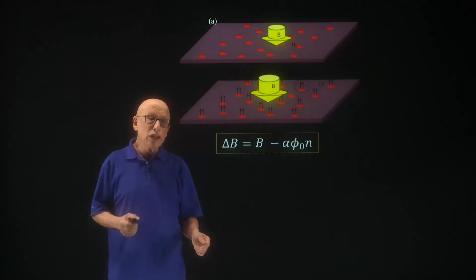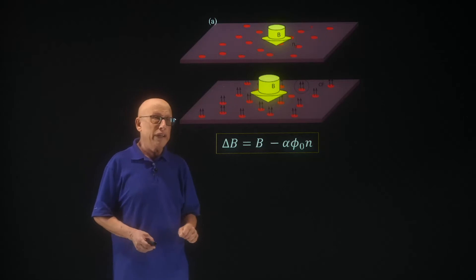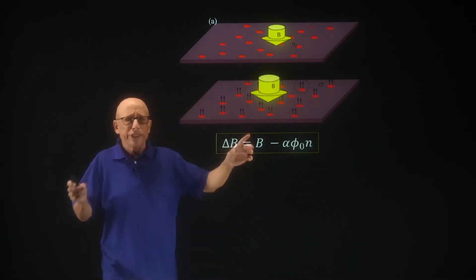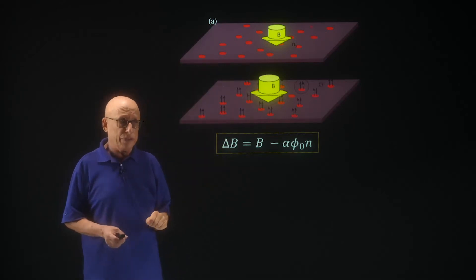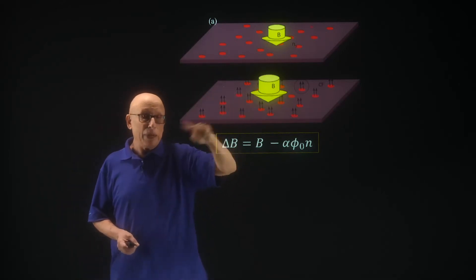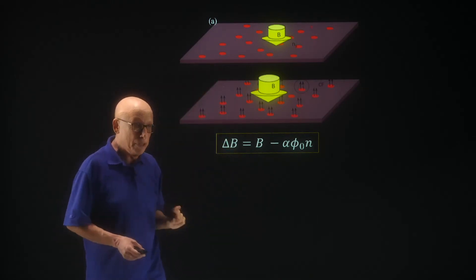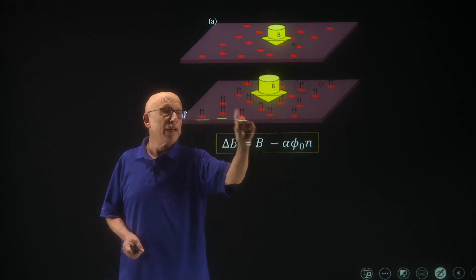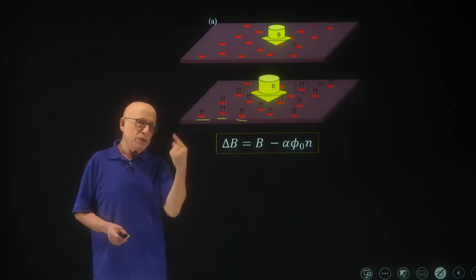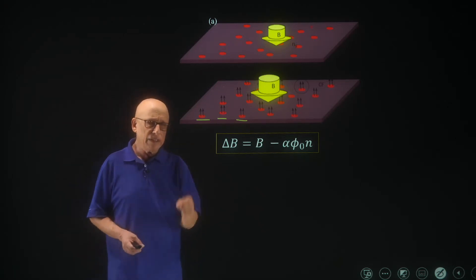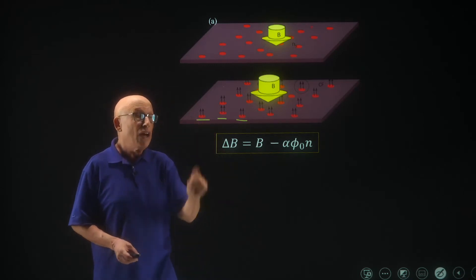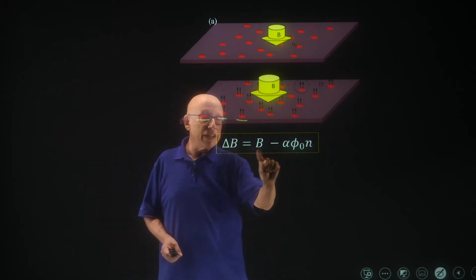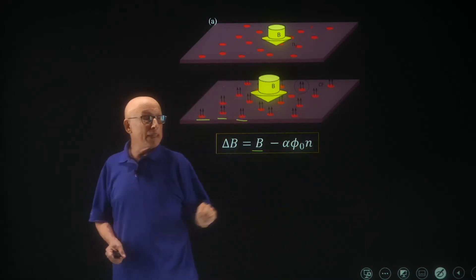Pictorially, we started from a system with electrons subjected to an external magnetic field B — a C number, not a quantum operator. By this transformation, we mapped the problem onto composite fermions subjected to the external magnetic field B plus the alpha flux quanta. Here in the picture we took alpha equals two, which is the value we will use mostly. These composite fermions see a magnetic field B minus alpha times phi-naught times n, but n is a quantum operator.